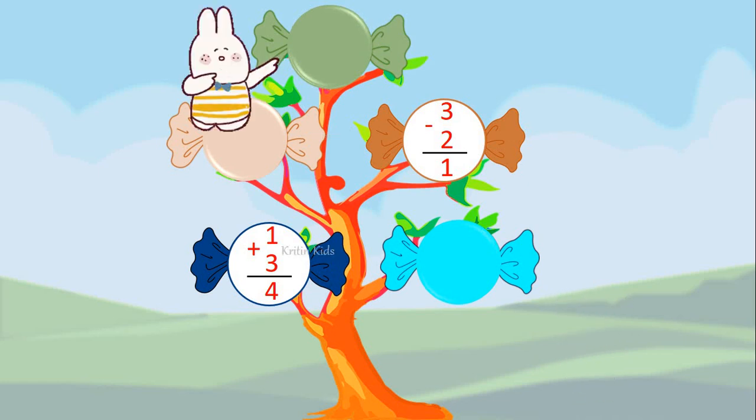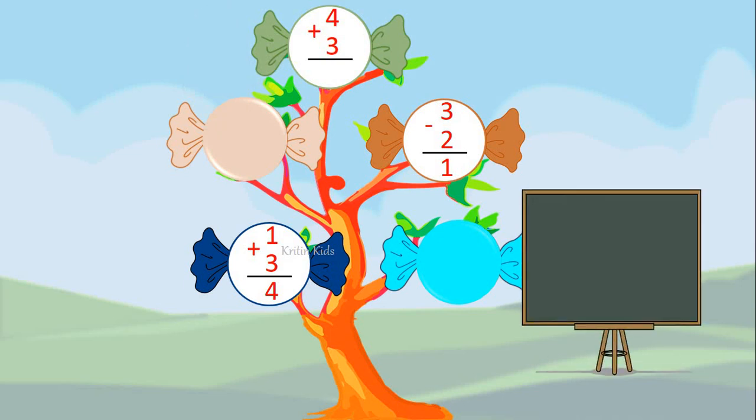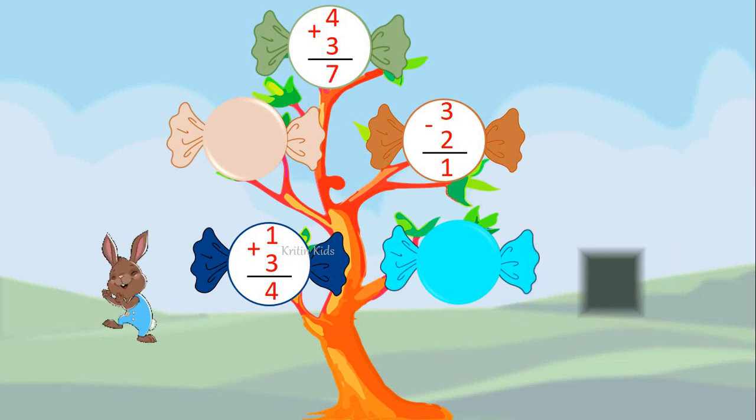Now let's check this one. Here we have four plus three. Four fingers plus three fingers will give us seven. So four plus three is seven.